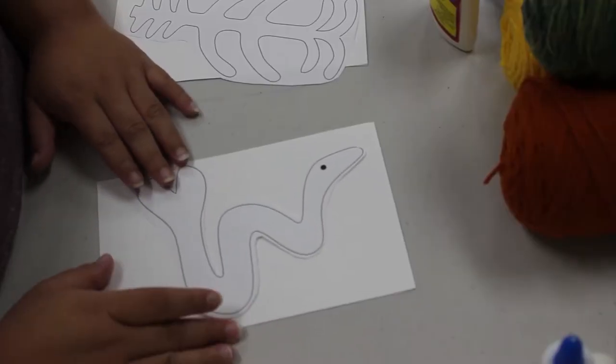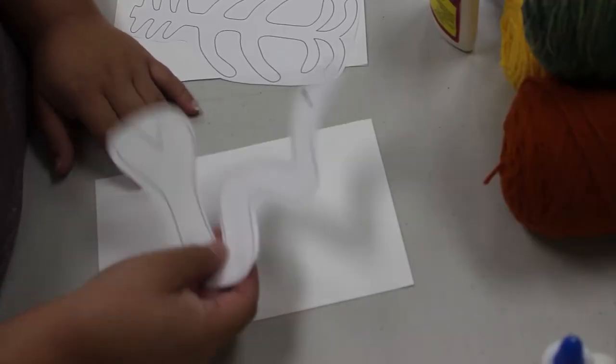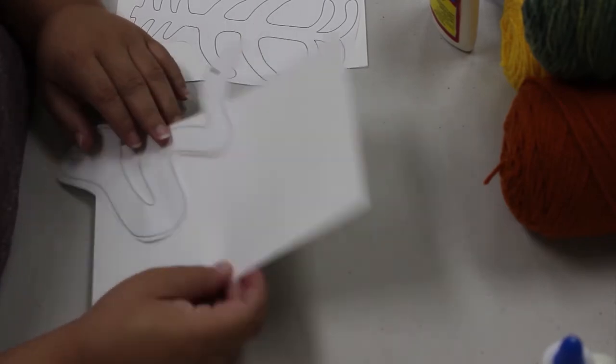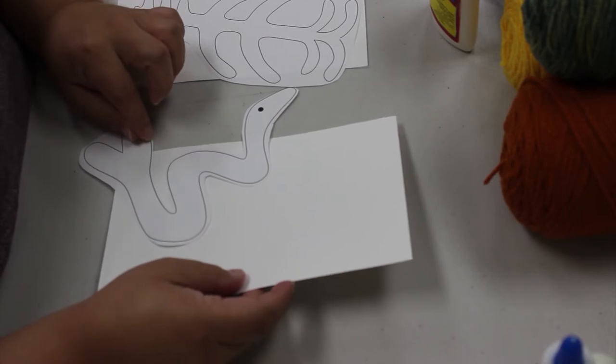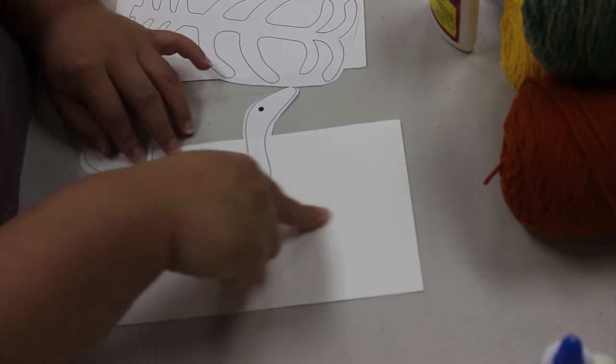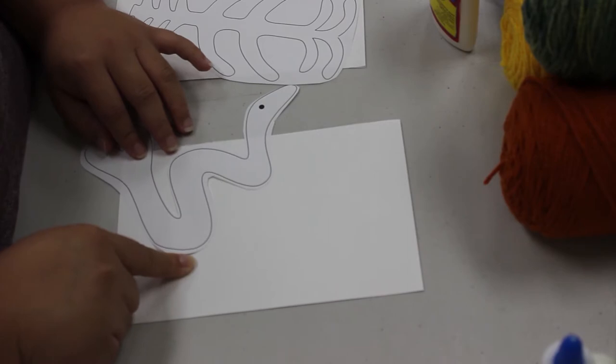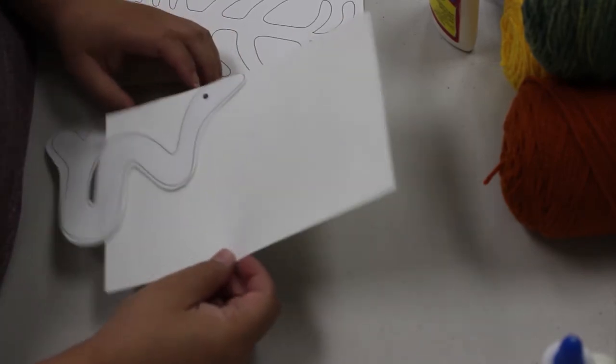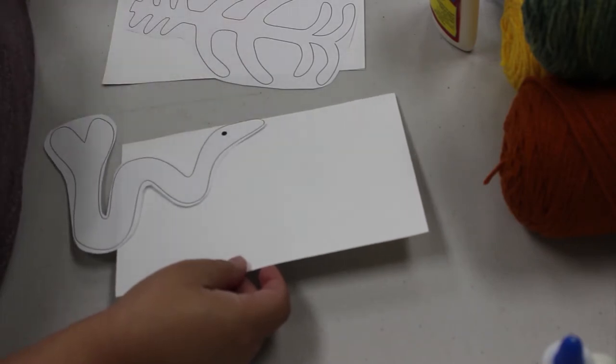The first thing you're going to do is glue your image onto a piece of cardstock. We're using cardstock because we want to make it a little bit more sturdy so that when we're gluing yarn onto the paper it will be able to support the glue and yarn.